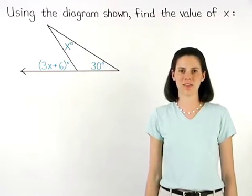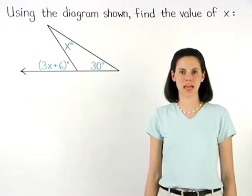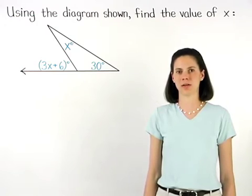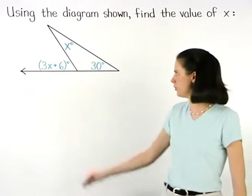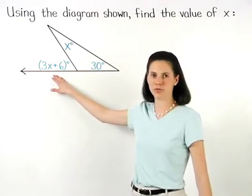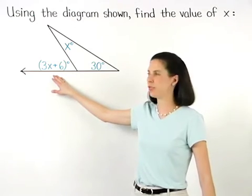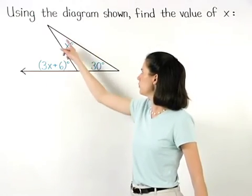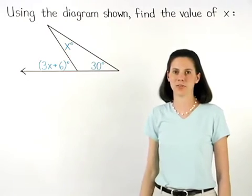To find the value of x in this problem, we use the exterior angle theorem, which states that the measure of the exterior angle of a triangle equals the sum of the measures of the remote interior angles.